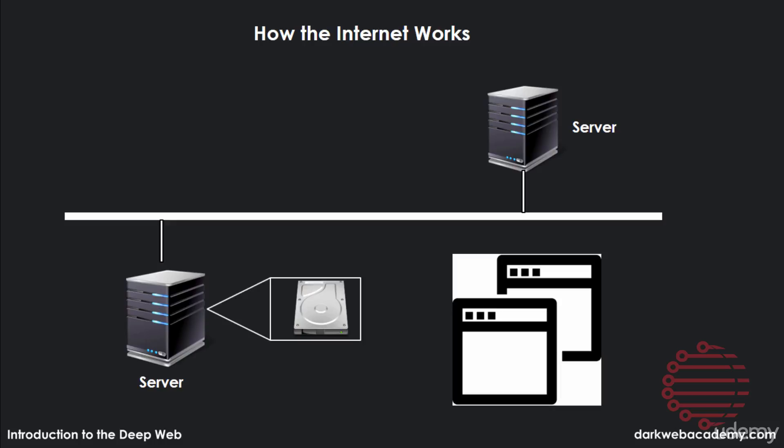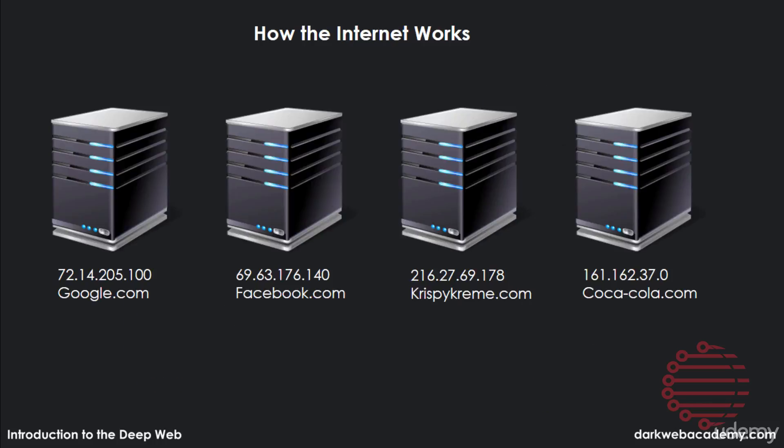But how does your computer know where to get the information for the website? Every server connected to the internet has an IP address, or internet protocol address. This address is kind of like your home address — it's something given to you and only you. If you look at Google.com's address, that address will not belong to anyone else in the world. That's the whole point of internet protocol: one address for one server on the internet.